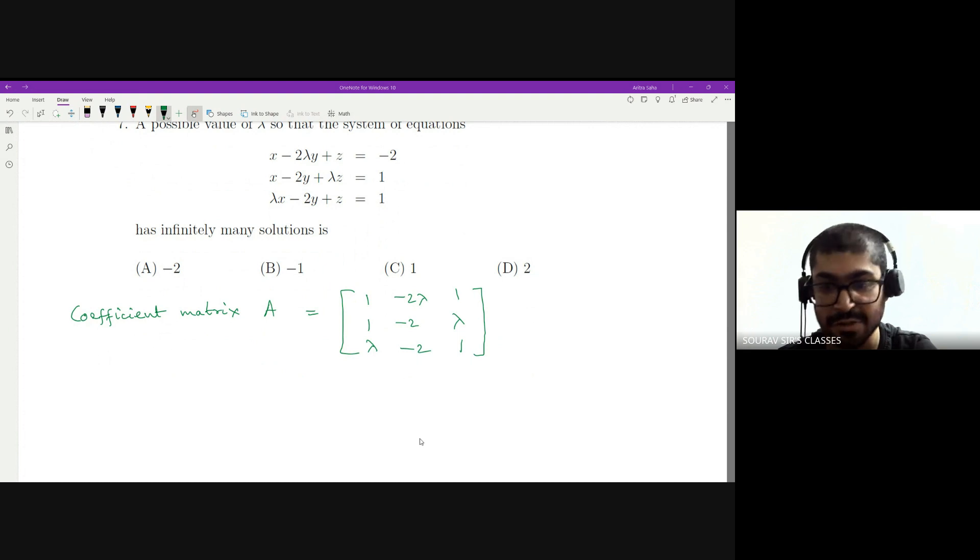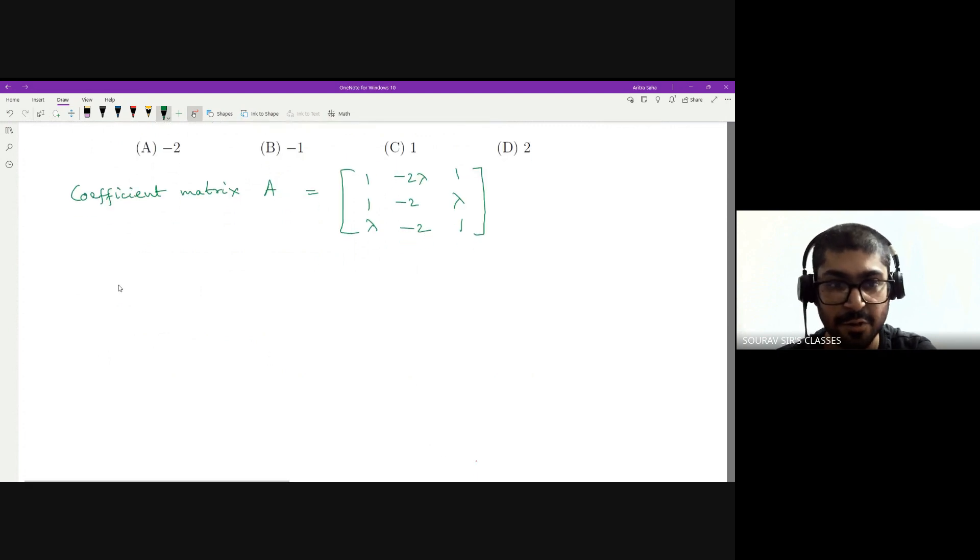So the determinant of this should be equal to zero. If it is equal to zero, then there are infinitely many solutions. If the determinant is equal to any non-zero real number, then the system can have a unique solution.